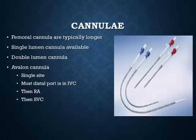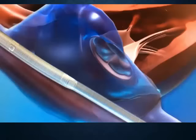Choosing the right cannula is a science unto itself. You can find charts online based on desired flows, patient type, and French cannula size. Femoral cannulas are generally longer. Single and double lumen cannulas are available. The Avalon cannula is a double lumen single-site cannula used at Henry Ford. The most distal port is in the IVC, the second port in the RA, and the third in the SVC — this reduces recirculation.